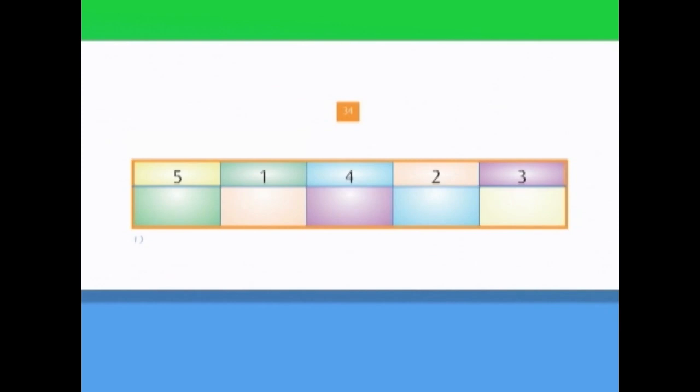So what are we going to do? We're going to take the numbers in the top row and write them in the boxes in the bottom row, but in the correct order. We're going to start with the smallest number, then the next number, and the next, until we get the biggest number.